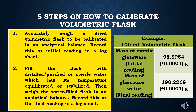Then weigh the water-filled flask in an analytical balance and record this as the final reading in a log sheet. As an example: there is a 100 ml volumetric flask to be calibrated. The mass of the empty volumetric flask is 98.5954 grams. When the water was filled, the flask was again weighed with a mass of 198.2268 grams.